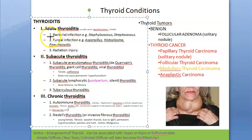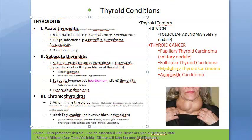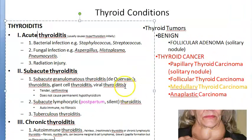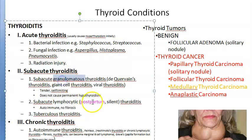In acute thyroiditis, causes include bacteria, fungus, and even radiation. Usually after infection, thyroid hormone levels may initially be elevated and later decrease. The causative organisms are Staphylococcus, Streptococcus, and some fungi. For subacute conditions, you have granulomatous subacute thyroiditis, also called de Quervain's thyroiditis, giant cell thyroiditis — it is viral and therefore self-limiting, with a tender thyroid.